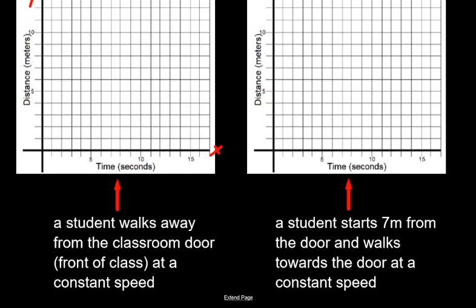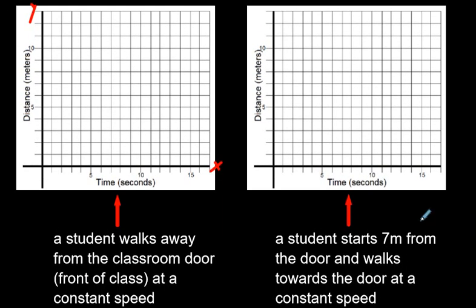So let's look at some scenarios. The first one, a student walks away from the classroom door at the front of the class at a constant speed. So we'll assume the classroom door is the starting point, right there. The student is walking at a constant speed, so it's going to be a straight line. If that student had been accelerating, in other words, walking and then moving to a run, I'll do that in blue, it could have gone kind of like this, very fast. That may be too steep to be realistic, but I hope you get the idea.